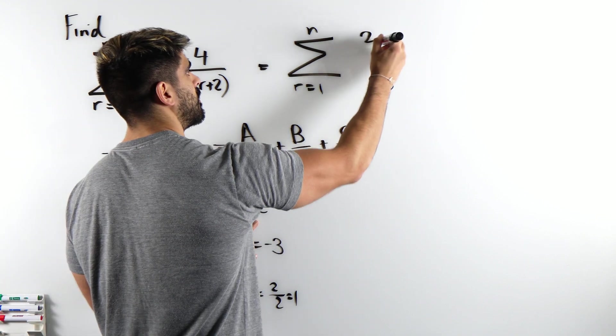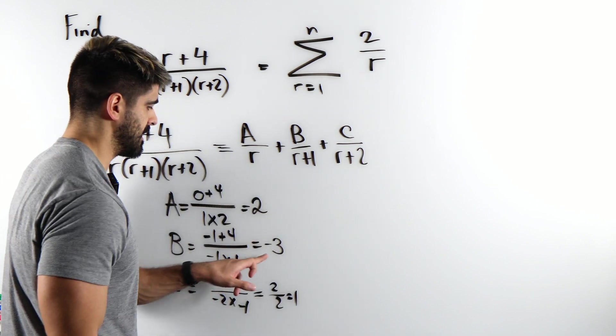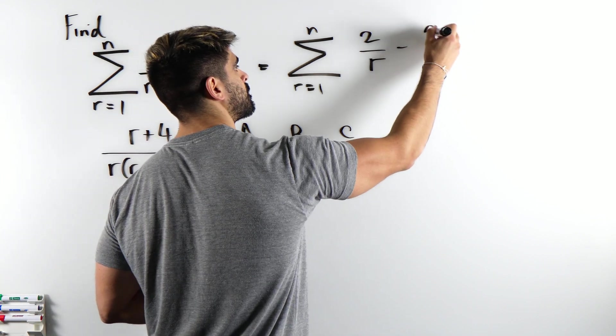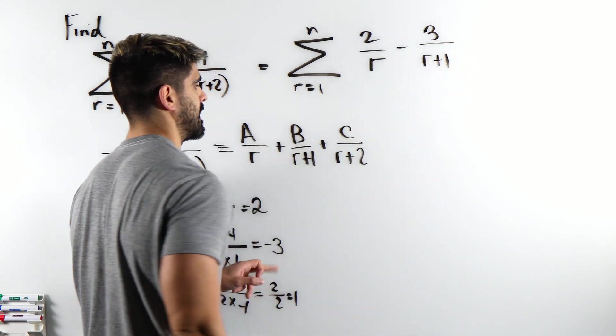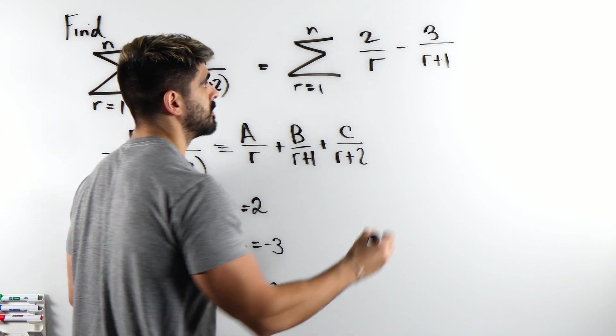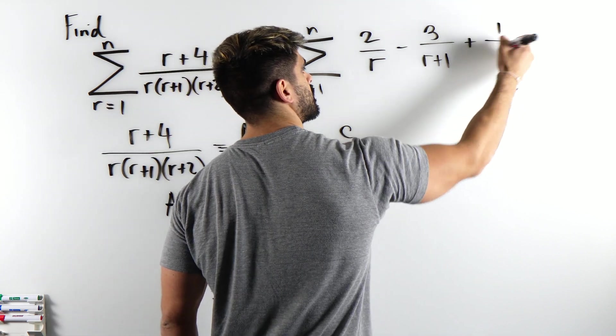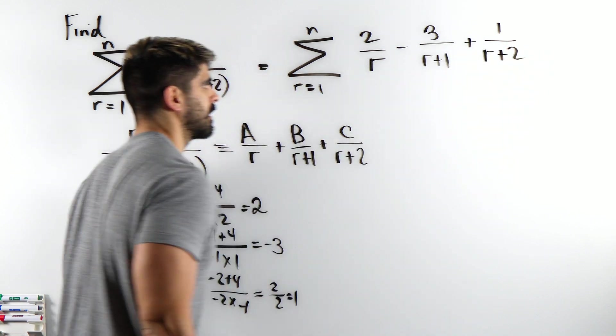So 2, yeah just do it in order. So 2 over r, then B is minus 3 over r plus 1 and then we have C which is 1 over r plus 2. Alright, sweet.